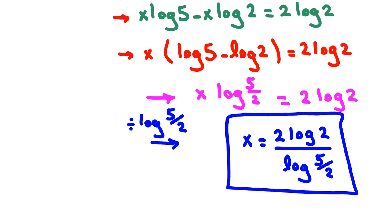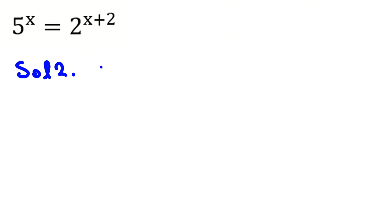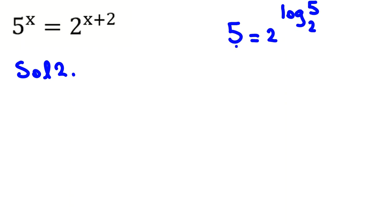Now let's look at Solution 2. By definition of logarithm, 5 equals 2 to the power of log base 2 of 5, because log base 2 of 5 is the number such that 2 raised to that power gives 5. So I replace 5 with 2 to the power of log base 2 of 5 in the original equation.